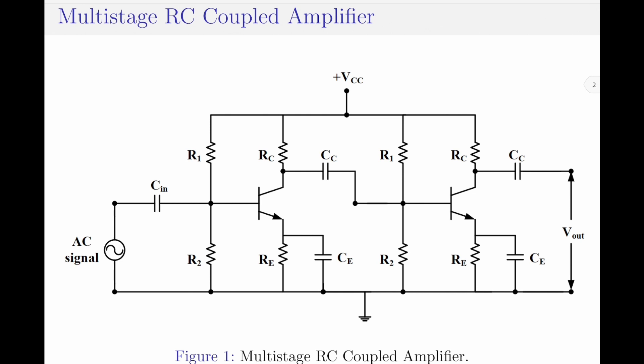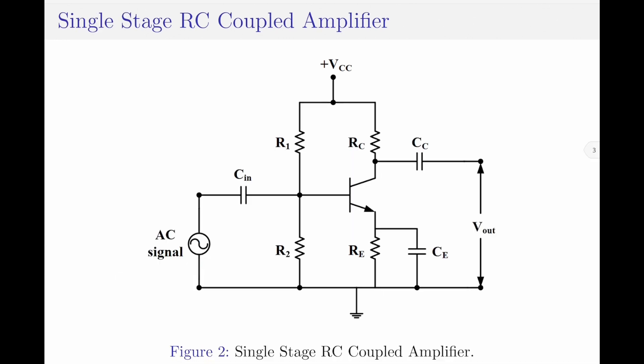Please note, the resistor and capacitor that are used to connect the individual stages are these — one is RC, another one is CC. It should be noted that each stage of the multi-stage RC coupled amplifier is nothing but a common emitter amplifier circuit. This is shown in figure 2, and as already said, this indicates one of the stages of the multi-stage RC coupled amplifier.